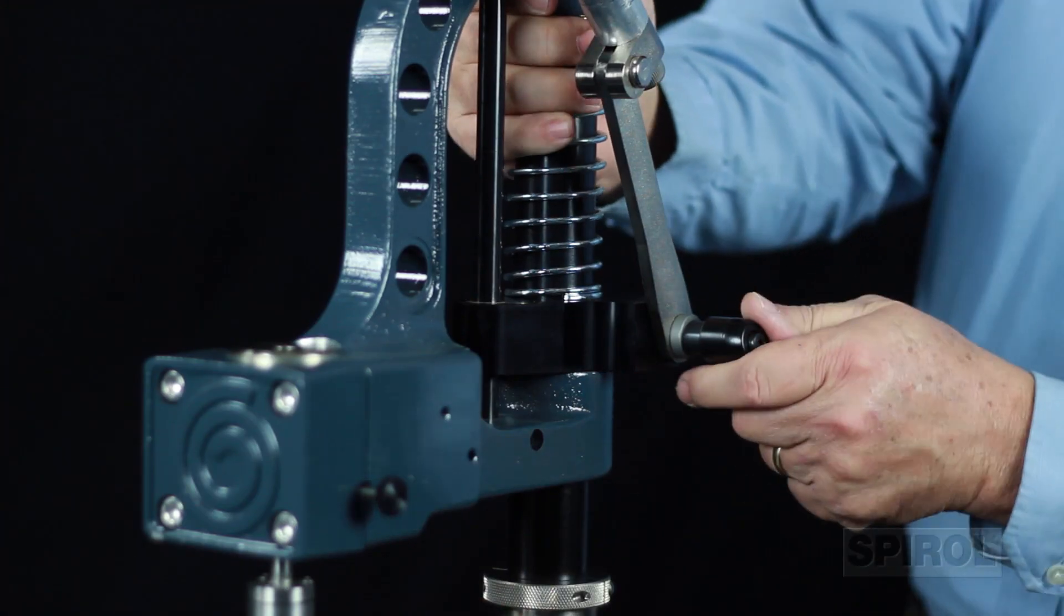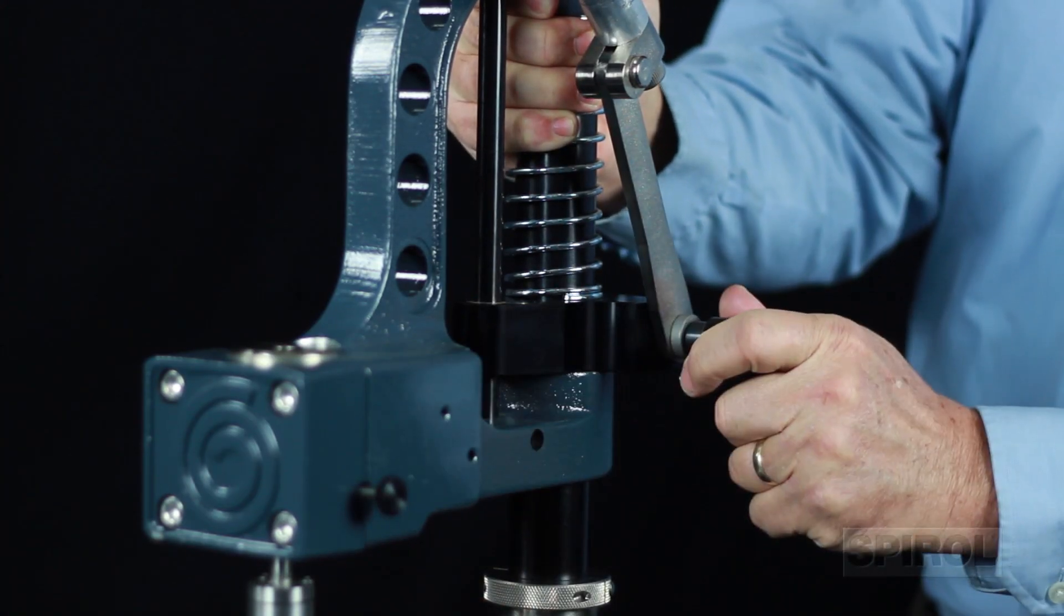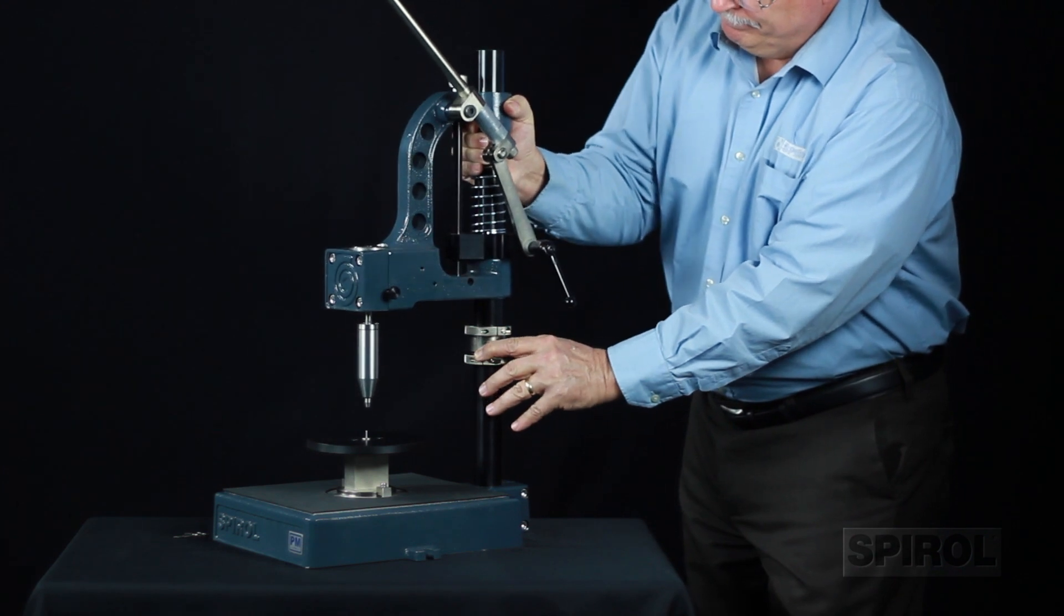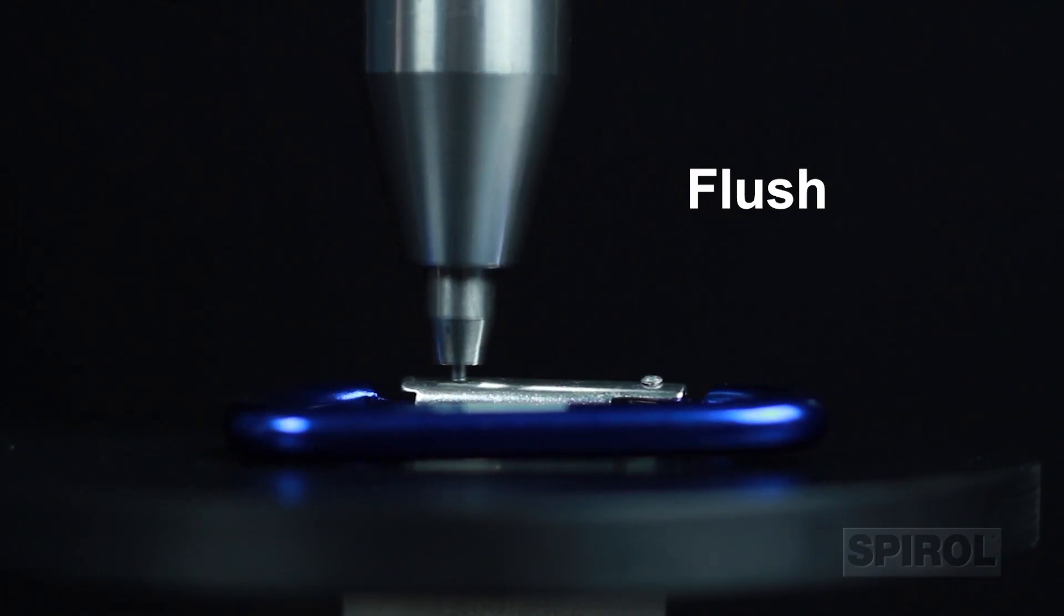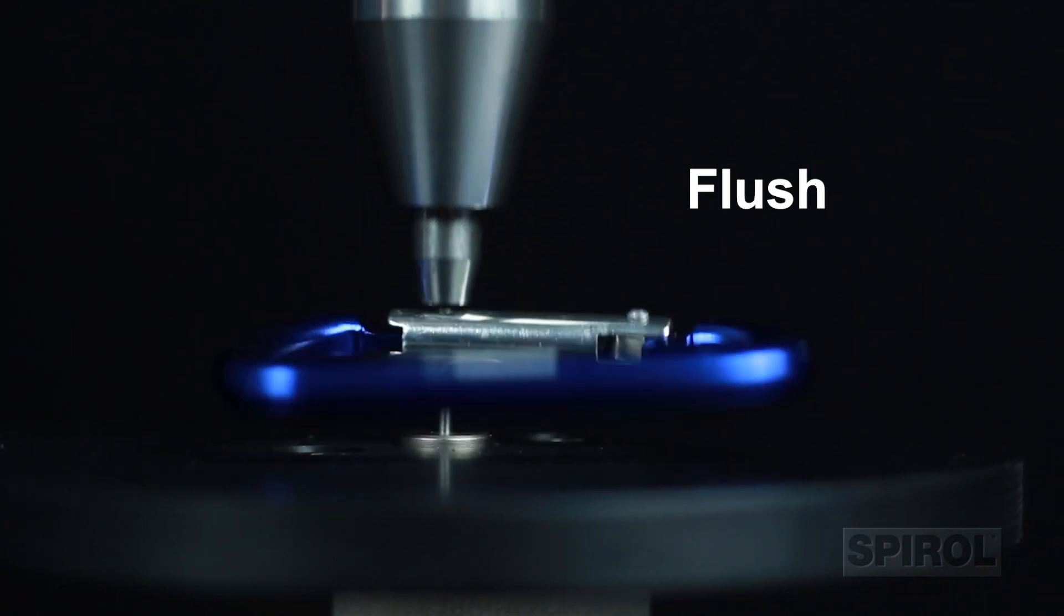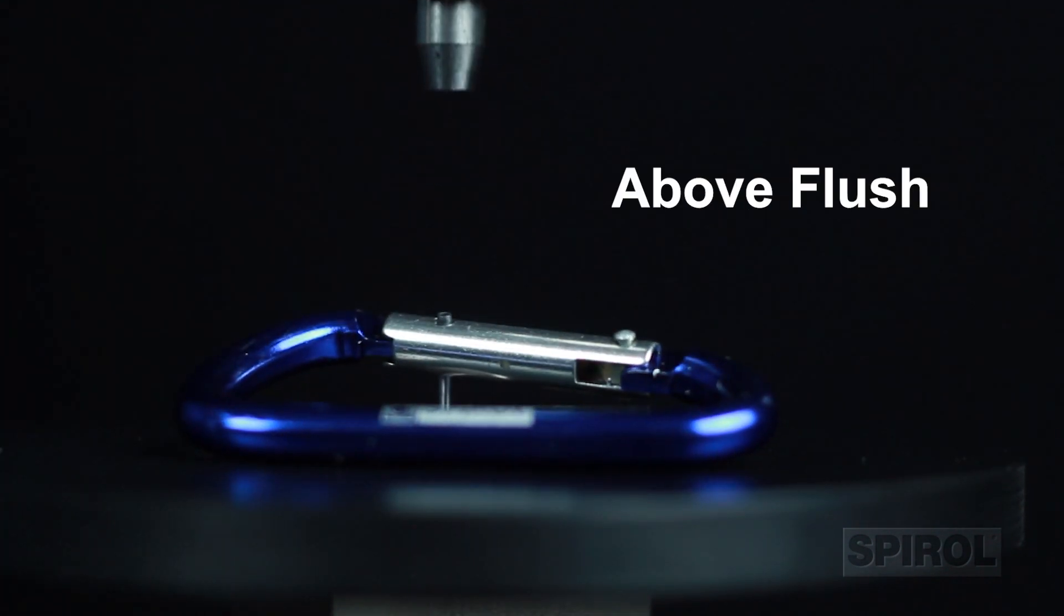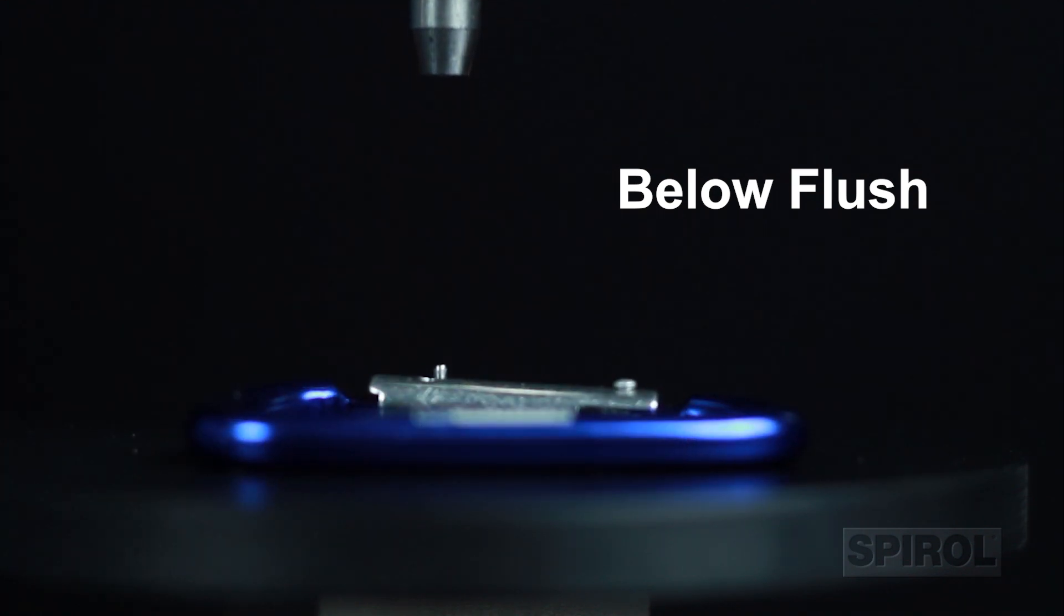The model PM is easily adjustable to establish throat height and depth of insertion. The tooling can be designed to install the fastener flush to the component surface, above flush, or below flush, to meet specific application requirements.